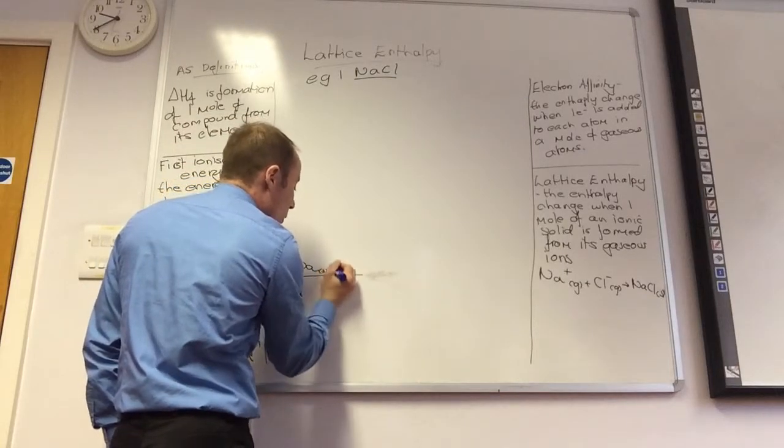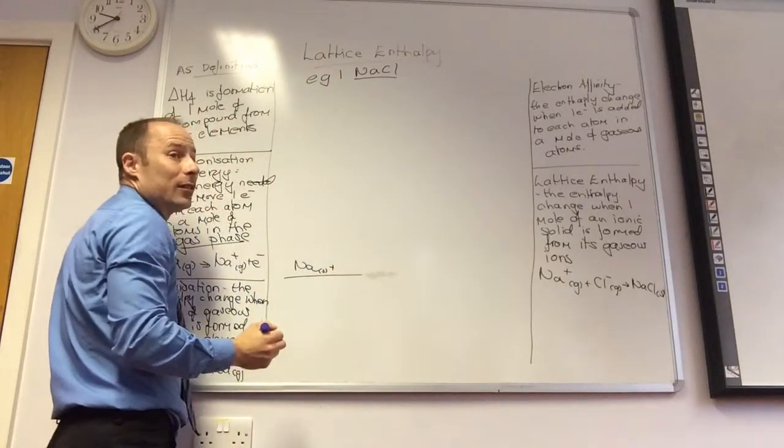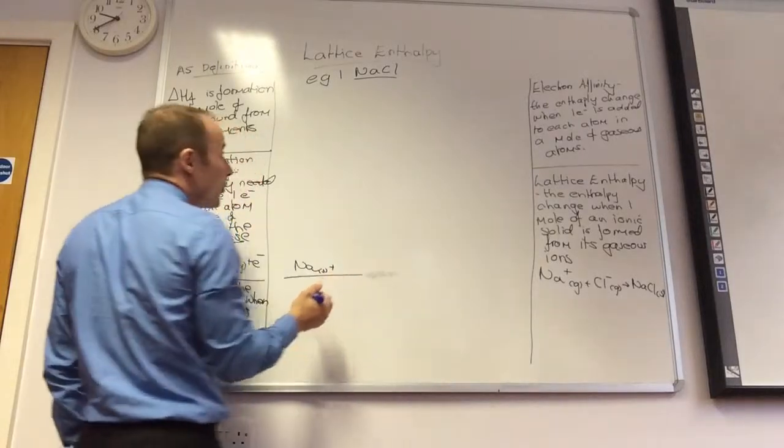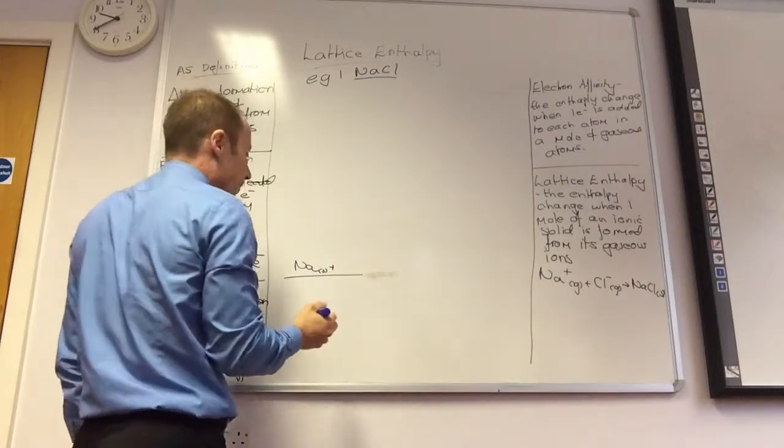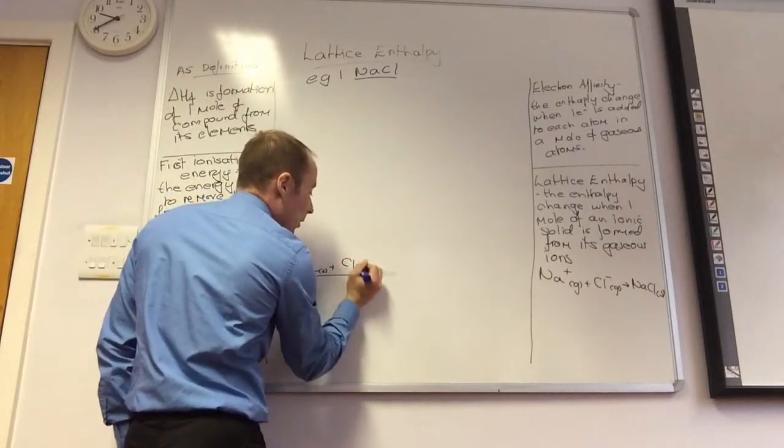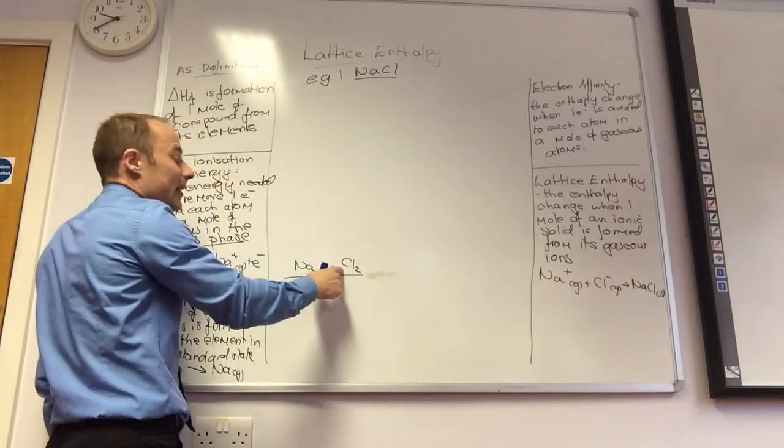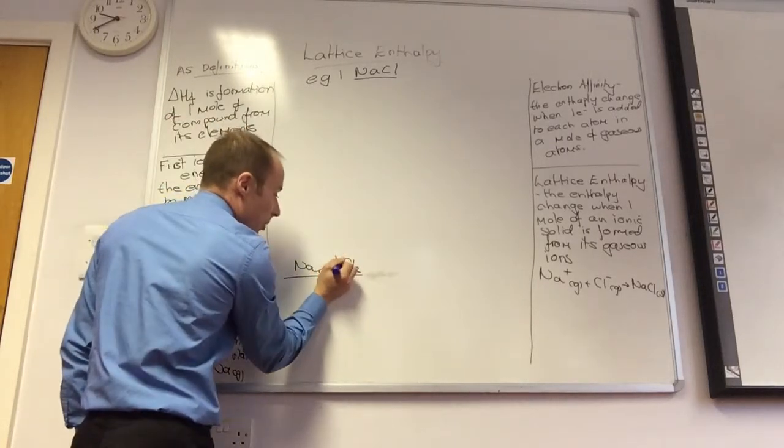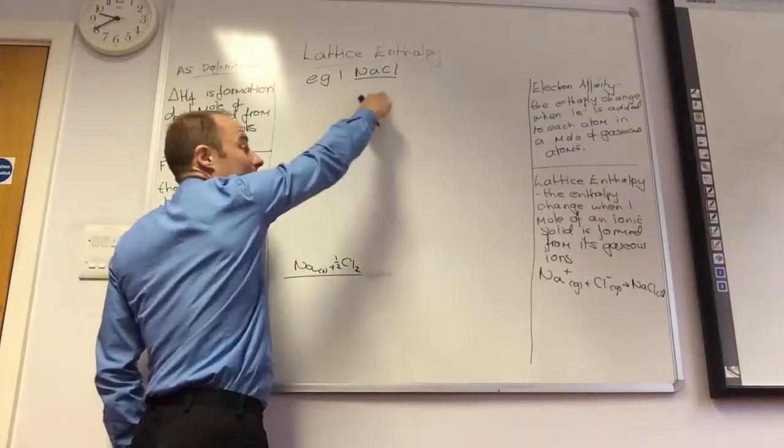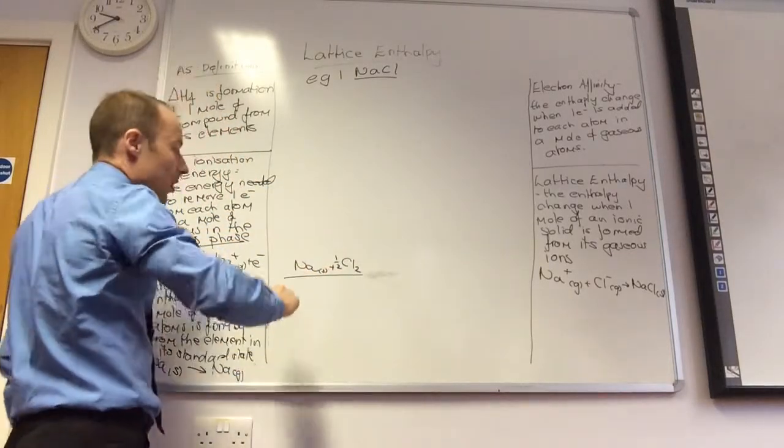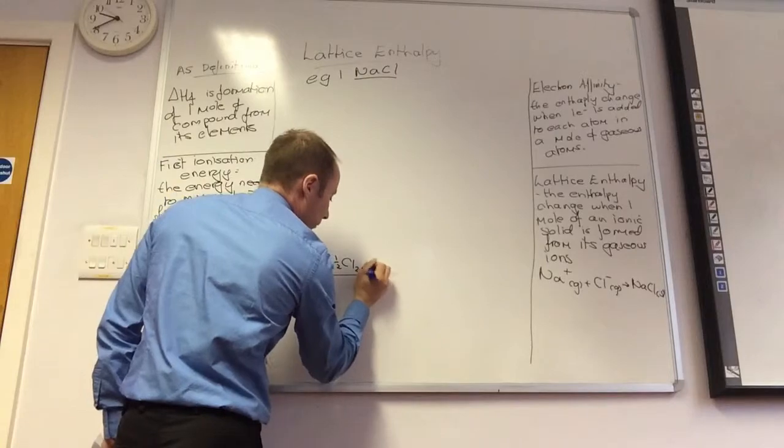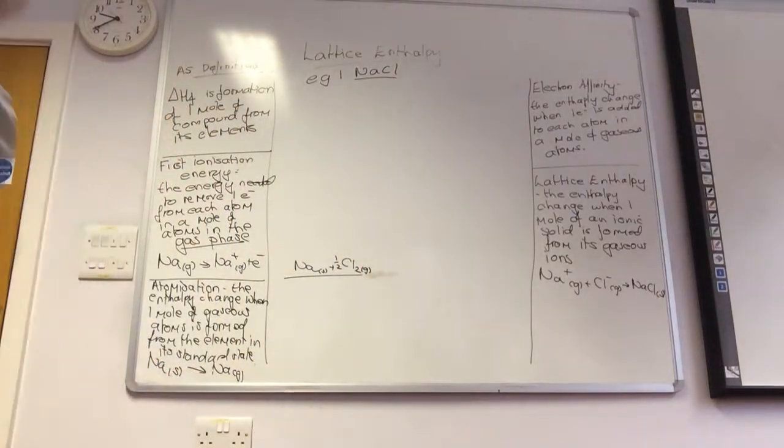Sodium is a solid. What about chlorine? It is gas. How do I always write chlorine? Cl2. How many do I need? Half. Half Cl2, because I only want one chlorine in the end. So that's element gas, in proportion to how you're going to do it.